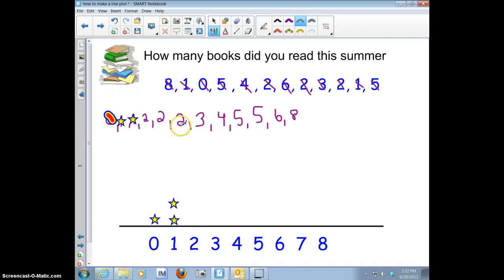Now, number 2, I have 1, 2, 3. So I'm showing that I have 3 number 2s. Okay, I've got 1, number 3. I've crossed it off.